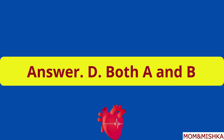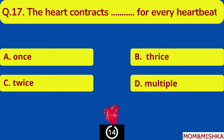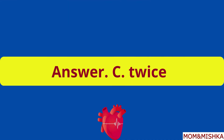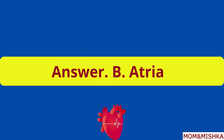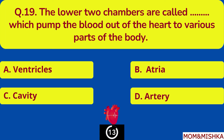What is the aorta? Both A and B. The heart contracts blank for every heartbeat — twice. What are the upper chambers of the heart called? The lower two chambers are called blank, which pump the blood out of the heart to various parts of the body.